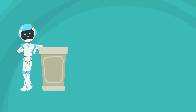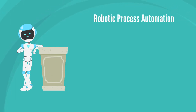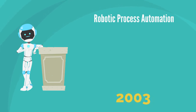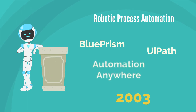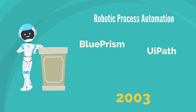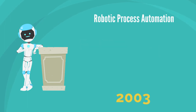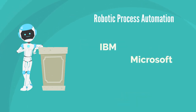RPA stands for Robotic Process Automation, and it first appeared as a concept somewhere in 2003, when companies such as Blue Prism, UiPath, and Automation Anywhere launched automation libraries almost at the same time. The concept was so successful that other big players such as IBM or Microsoft decided to enter the market.